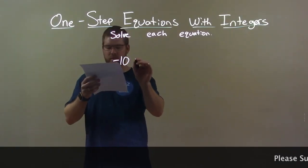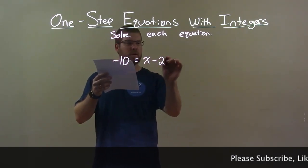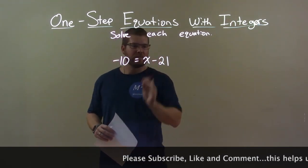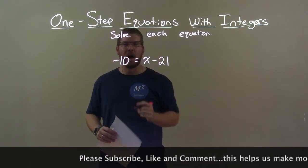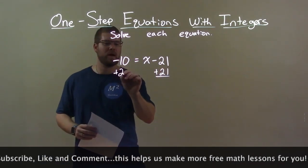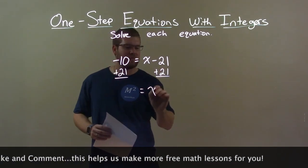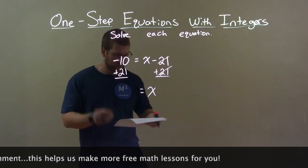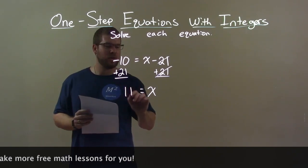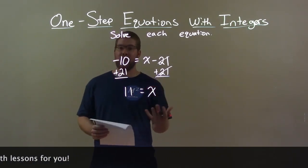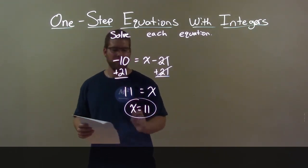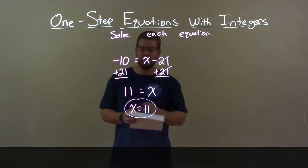Negative 10 equals x minus 21. I want to get x by itself. I have subtract 21 right next to it — opposite of subtraction is addition. I add 21 to both sides. This gives me x by itself; the 21s cancel. Now negative 10 plus 21 is a positive 11. So 11 equals x — we can write x first. Our final answer is x equals 11.